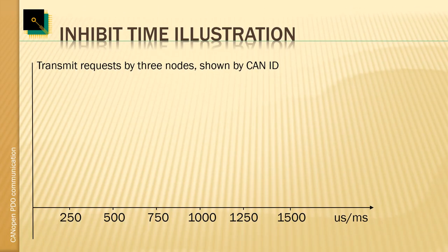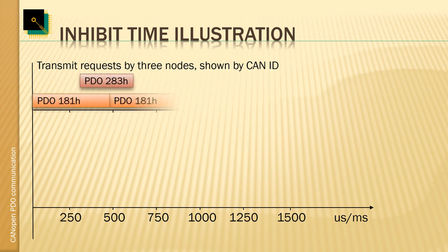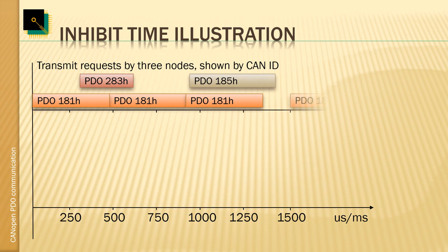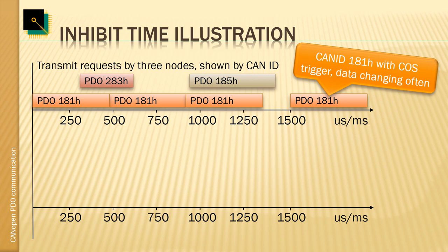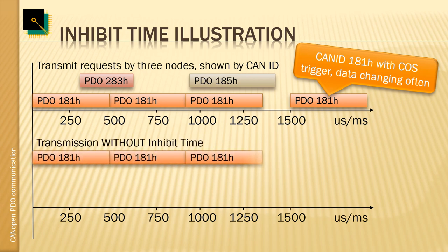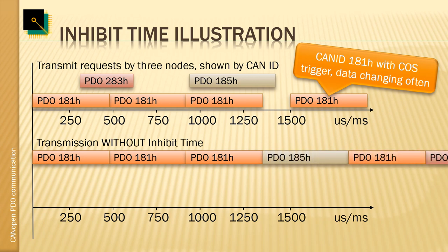I'd like to give an example of how the inhibit time really works. Let's assume we have PDO 181, which is triggered by a change of state, that it has no inhibit time, and the data changes a lot — so it's transmitted quite frequently. The lower-priority PDOs 283 and 185 do not have a chance to get in between, because 181 is transmitted all the time. On the bus, this scenario would result in messages 185 and 283 barely getting a chance to be transmitted.